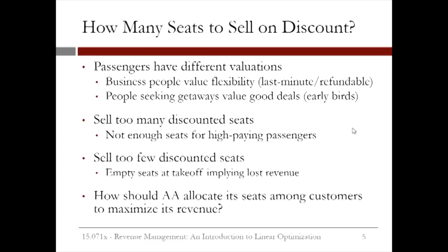The key question in revenue management is how many seats to sell on discount. The key consideration is that passengers have different valuations. For example, business people value flexibility, whereas people seeking a vacation value good deals. So if we sell too many discounted seats, then there would not be enough seats for high paying passengers. At the same time, if we sell too few discounted seats, then we will have empty seats which lead to lost revenue. So the key question is how airlines like American can allocate their seats among customers in order to maximize their revenue.